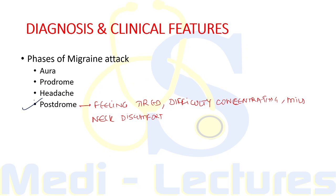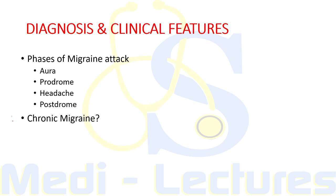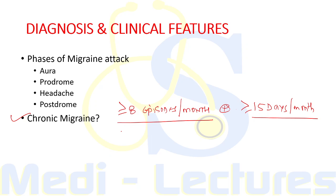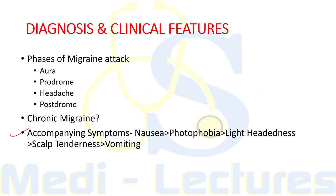After the premonitory symptoms comes the main headache phase with associated features like nausea, photophobia, phonophobia, and allodynia. The final phase is post-drome, lasting a few hours to a day, with tiredness, difficulty concentrating, and mild neck discomfort. Migraine is defined as chronic when there are more than or equal to eight headache episodes per month resulting in more than or equal to 15 days of headache per month, since migraine attacks last 4 to 72 hours.